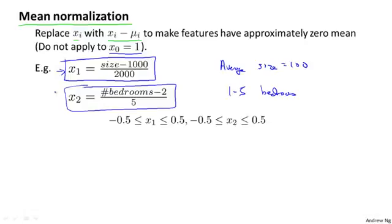In both of these cases, you therefore wind up with features x1 and x2 that can take on values roughly between minus 0.5 and positive 0.5. It's actually not true - x2 can actually be slightly larger than 0.5, but close enough.